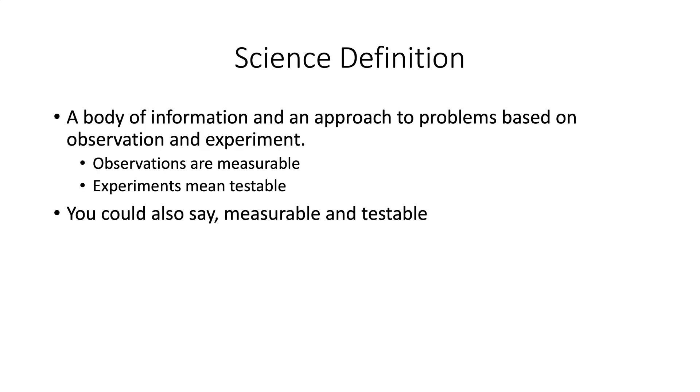This is a science class, so let's start off with some definitions and a definition of what science is. A good definition of science is a body of information and an approach to problems based on observation and experiment. Observations are things that are measurable, and experiment means testable. So you could say science is anything that's measurable and testable.